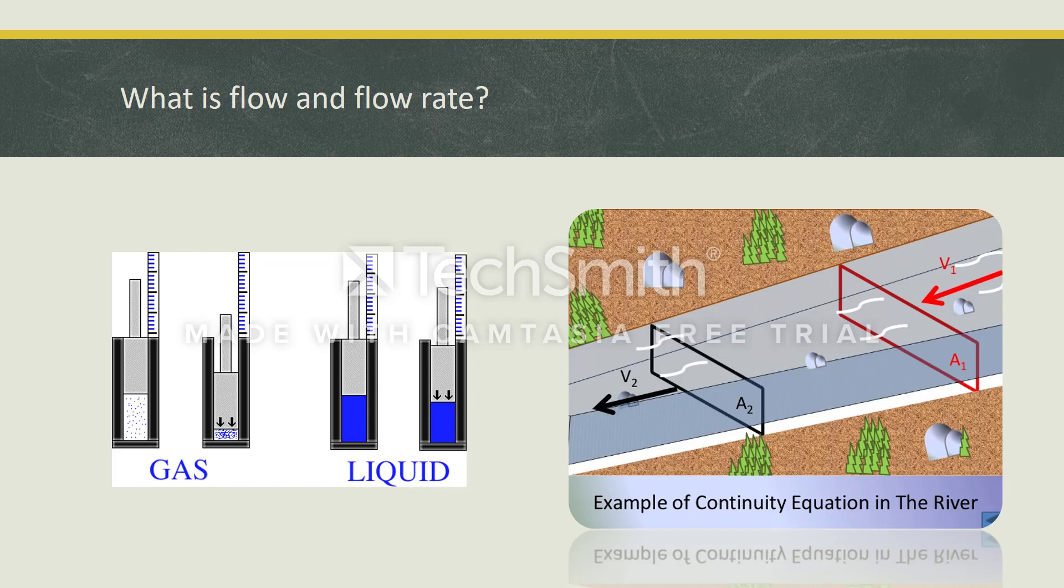For example, we can calculate how much water flows in a river or how much liquid passes in a pipe. Sounds boring, we know. But knowing flow and flow rate is crucial for humanity. We are using them everywhere in our lives.